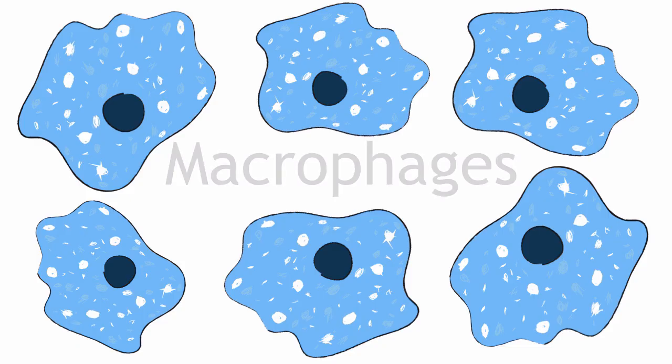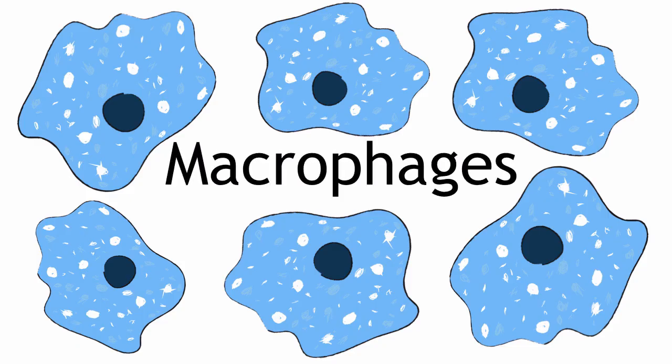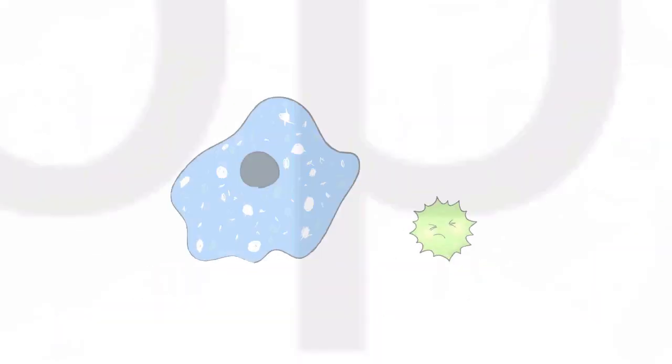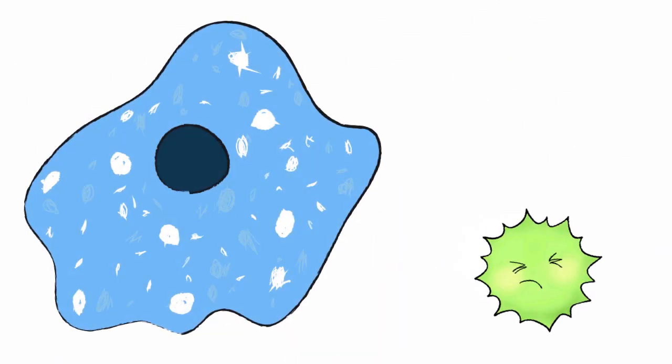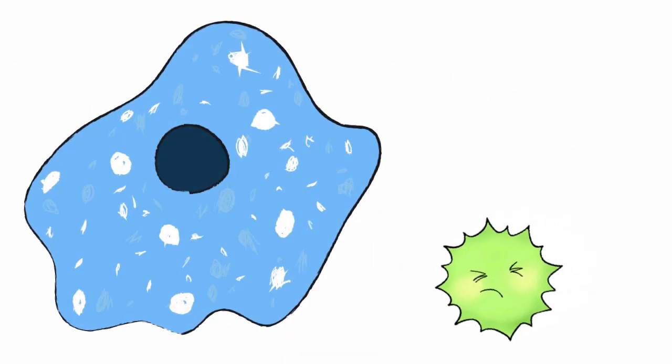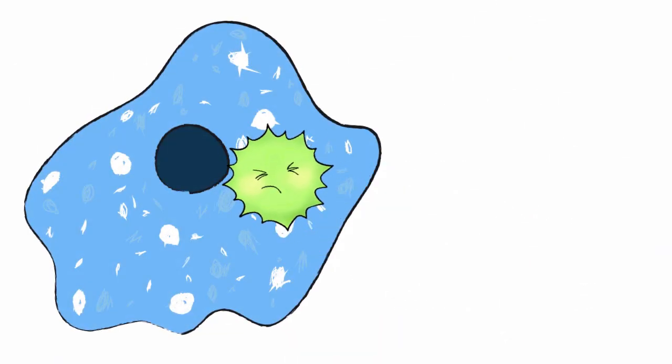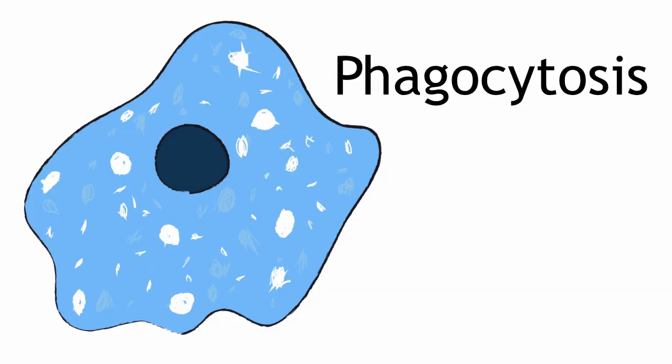Luckily for you, there is an army of immune cells in your leg waiting for this very moment. These immune cells, called macrophages, are able to recognize the bacteria as a potential threat, based on molecules the bacteria express on their cell surface. Once the macrophages recognize the bacteria, they can then go on to destroy it by eating it — a process known as phagocytosis.